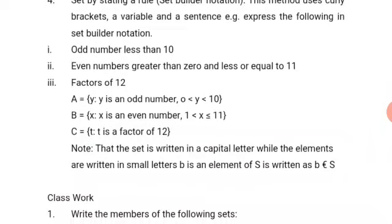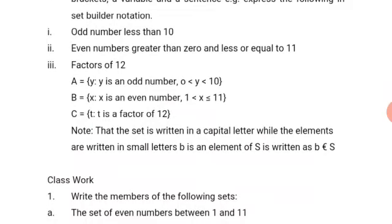Now, it means that these numbers, the even numbers should fall between 1 to 11. The last one on this is factors of 12. Now, we are using C to represent the set, that is capital C, which is equal to T is such that T is a factor of 12.